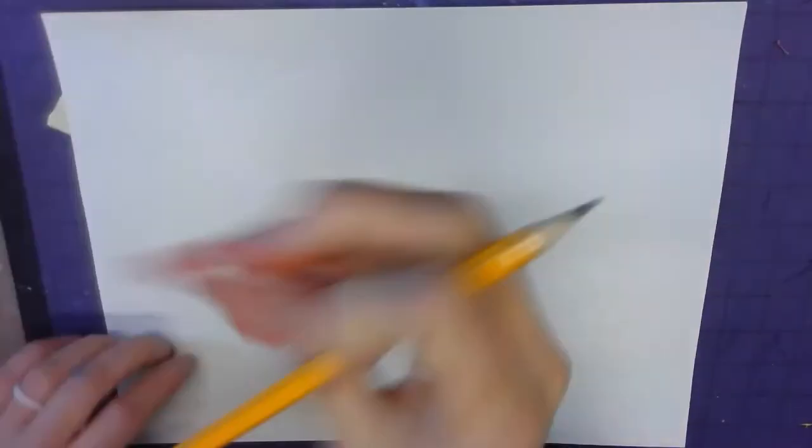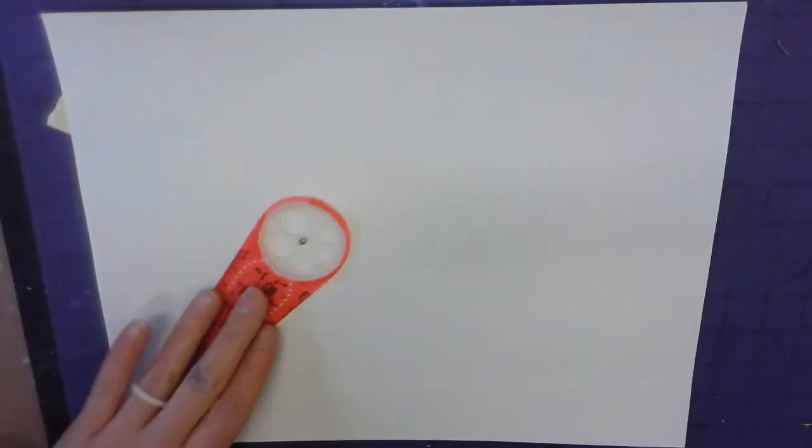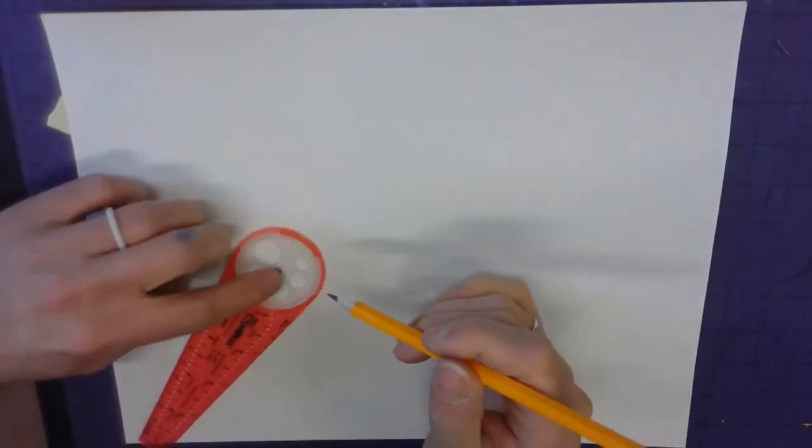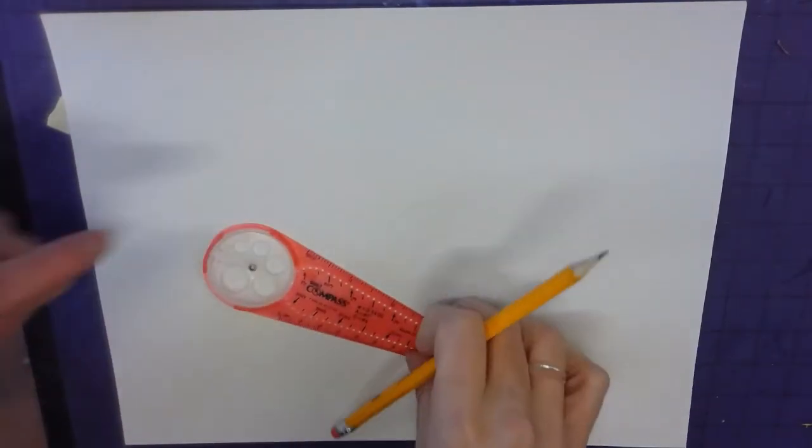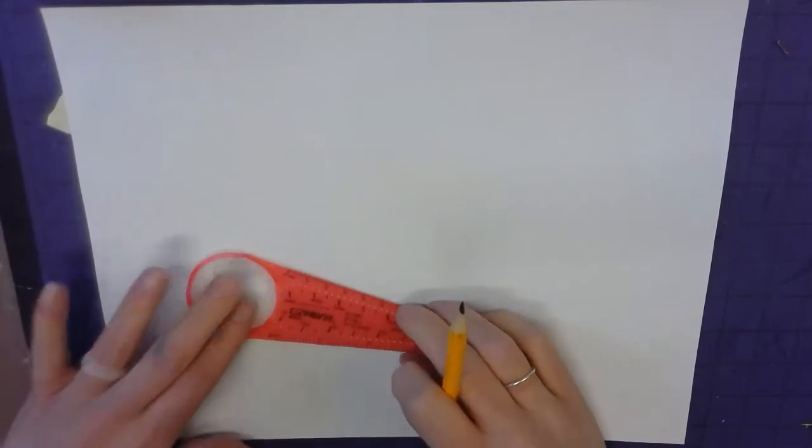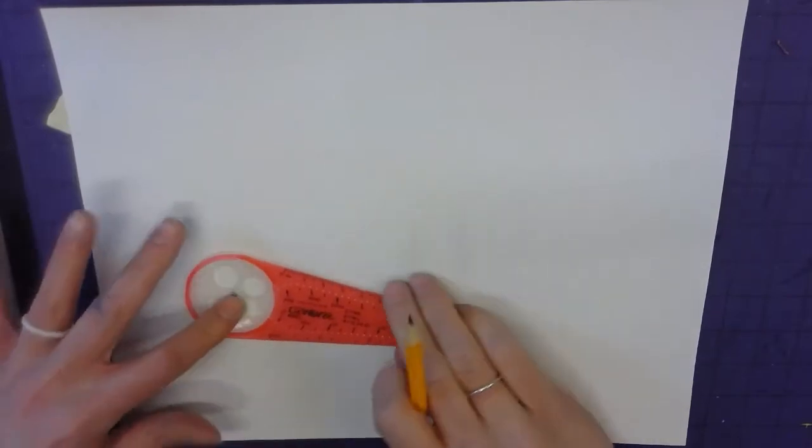For the shapes into forms project, the first thing we need to do is create four or five forms on our paper. Your paper is going to be a little bit larger than mine, but for now go with this circle maker. Please make sure that's flat so you don't want it to be popped up like this.